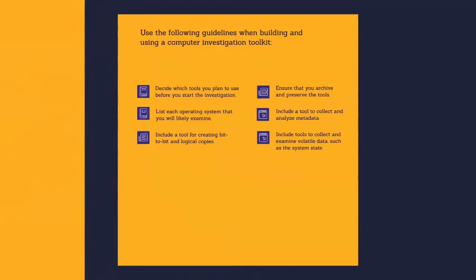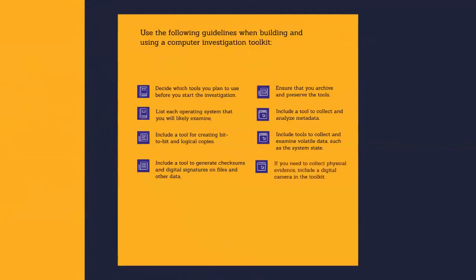Include tools to collect and examine volatile data such as the system state. Include a tool to generate checksums and digital signatures on files and other data, such as the File Checksum Integrity Validator tool. If you need to collect physical evidence, include a digital camera in the toolkit.